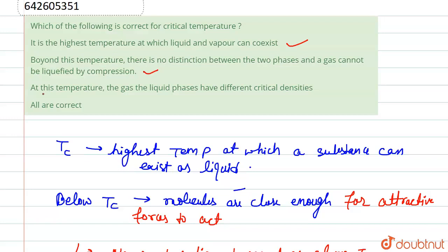If we come to the third statement, which is saying at this temperature the gas and liquid phases have different critical densities, well this is not true. So our correct option is only A and B. Thank you.